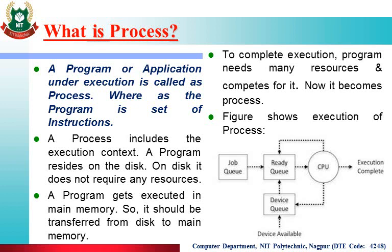First one is job queue. The operating system executes a number of processes at the same time, and there are a number of processes present inside a computer system at the same time. Not all processes can be ready for execution at the same time. All the processes in the computer system are maintained in the job queue, and the job queue is maintained on a hard disk.